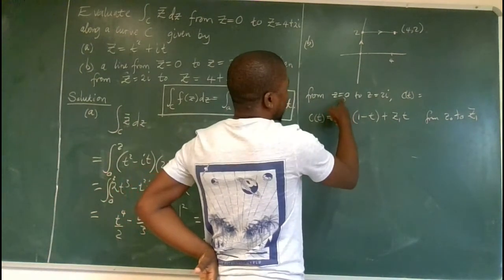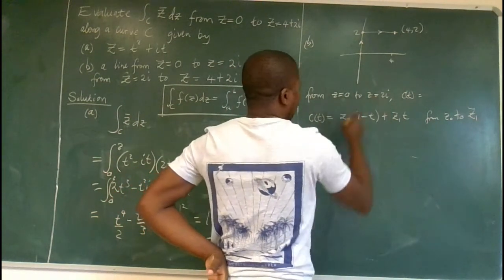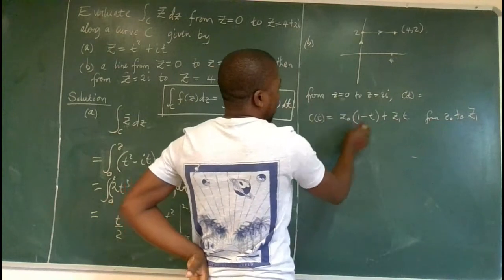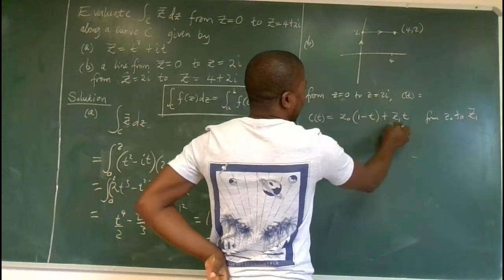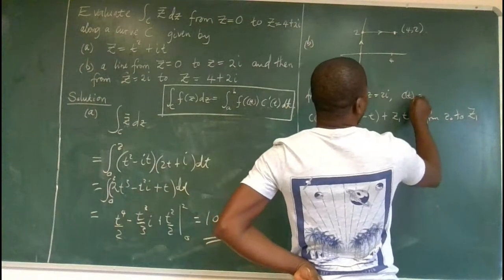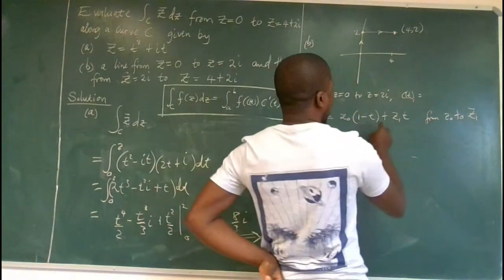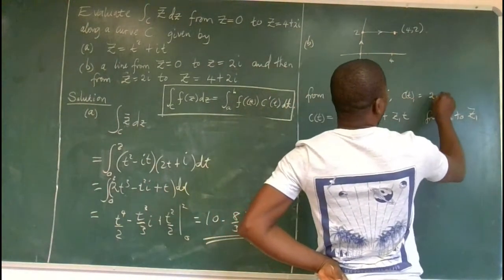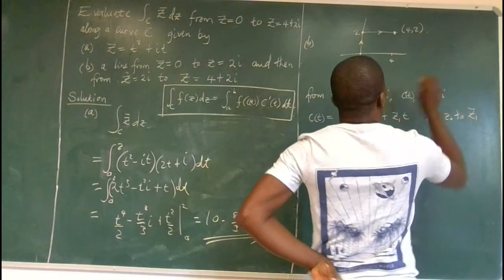then the parameterized function c(t) is z0 times (1 minus t) plus z1 times t when you are moving from z0 to z1. So in this case, we are moving from z equals 0 to that. Let's substitute. We put 0 here, everything becomes 0, 2i we multiply by t. So for this piece, the first piece, let's call that c(t)1, will be none other than 2ti.